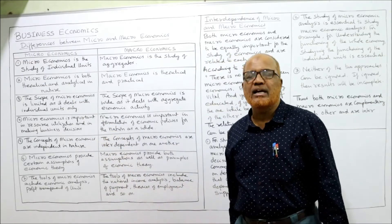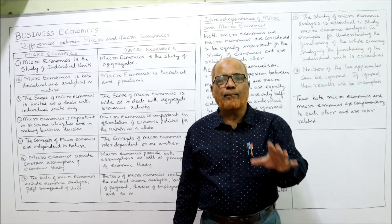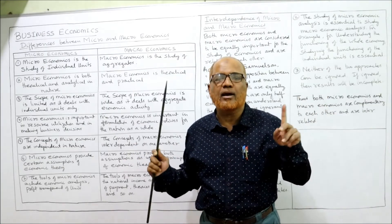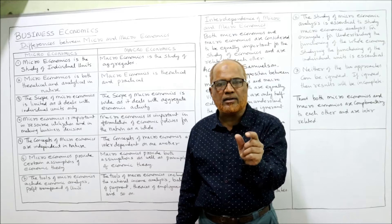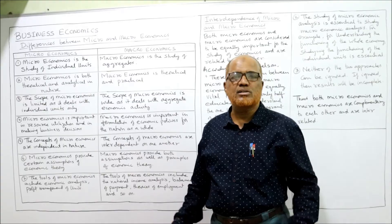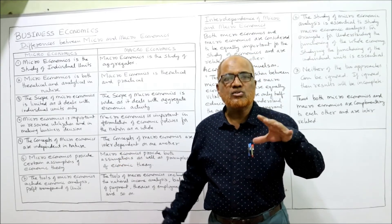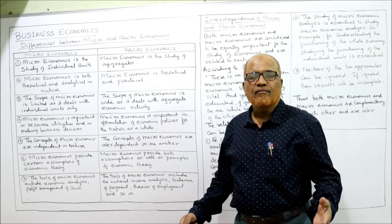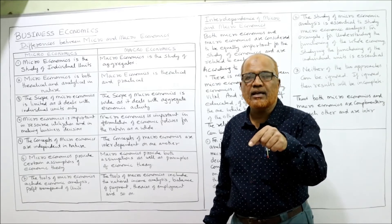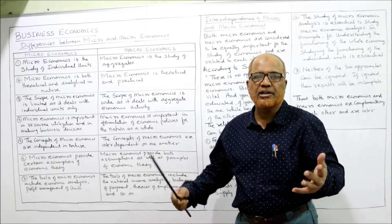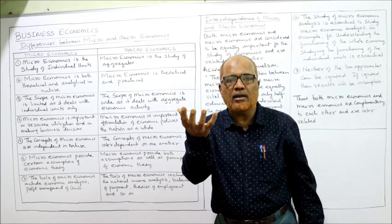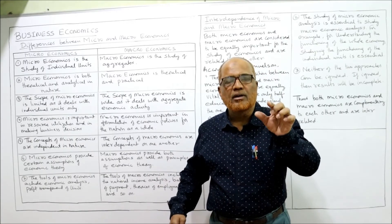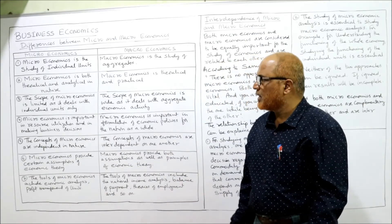The scope of microeconomics is limited, as it deals with individual units only. From the whole economy we select only one unit to study, so the scope is narrow. The scope of macroeconomics is very wide, because we study all firms in the nation, national income across all people, and the production of all units — not just a single firm or individual.